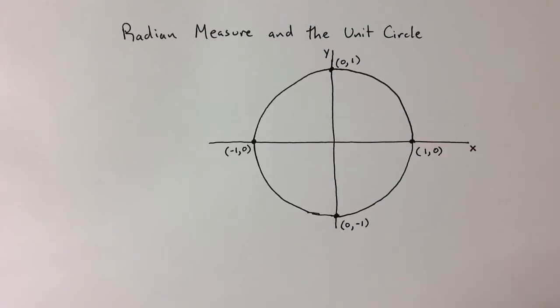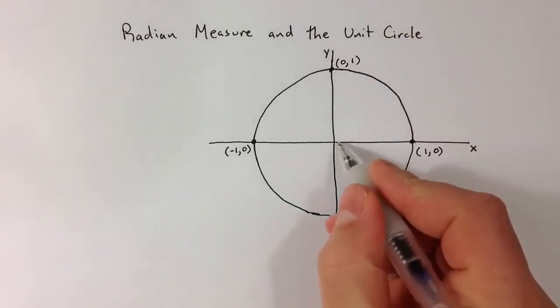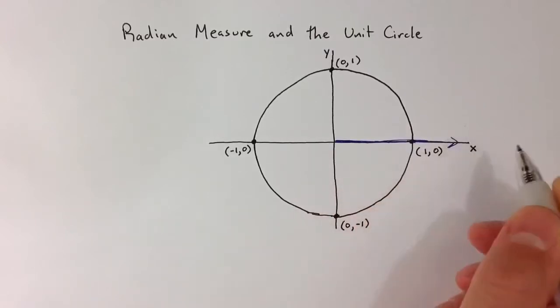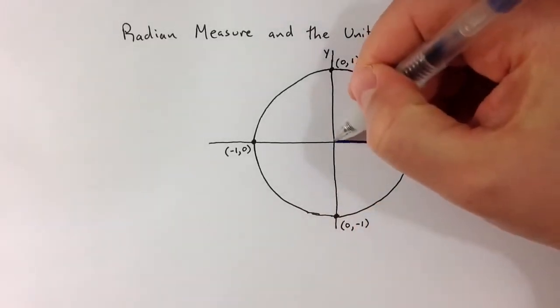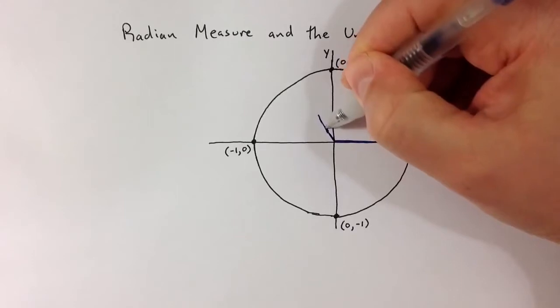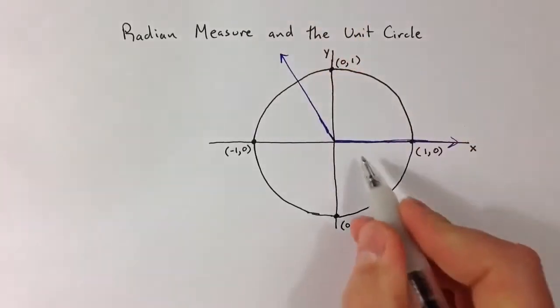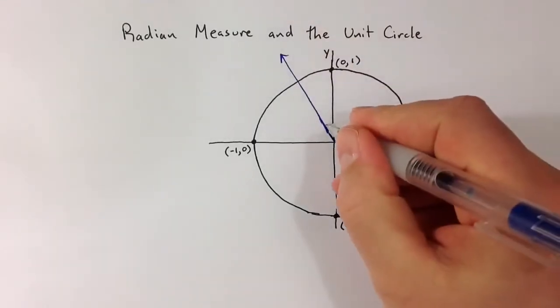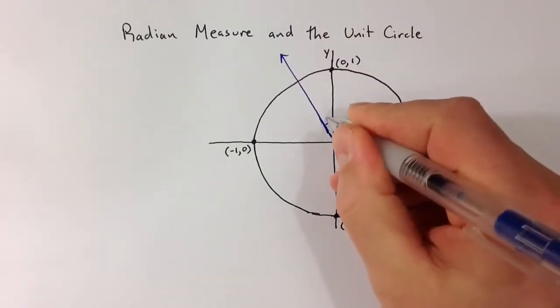The notion of angles in standard position allows us to take an angle measure of any size, and viewing it as a rotation, we can place the initial side on the positive x-axis, and the terminal side is then determined by the amount of rotation that happens.